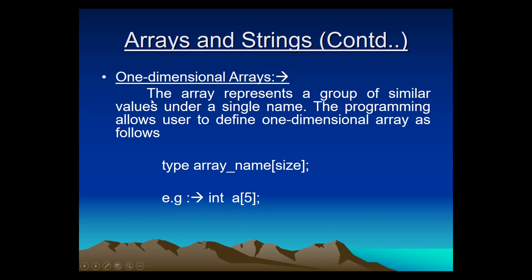One dimensional array represents a group of similar values under a single name. The programming syntax requires: first the data type, then the array name, and then in square brackets the size. For example, if I write integer A with size 5 in brackets, it creates a one dimensional array where the name is A. It holds five different values, all of the same data type integer.